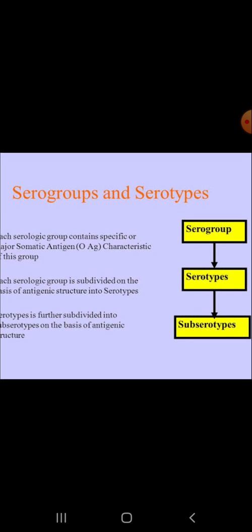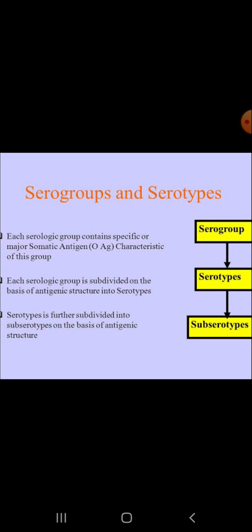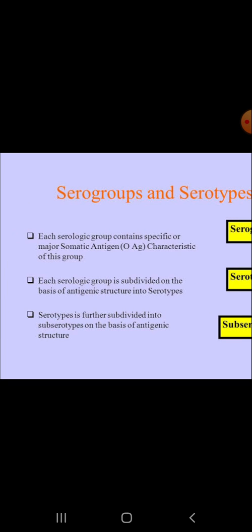A serogroup is the same microorganism which shares common antigens. This is the serologic group containing specific and major somatic antigen — the O antigen and outer polysaccharide. So serogrouping refers to organisms sharing the same somatic antigen, especially in the case of capsular polysaccharide.